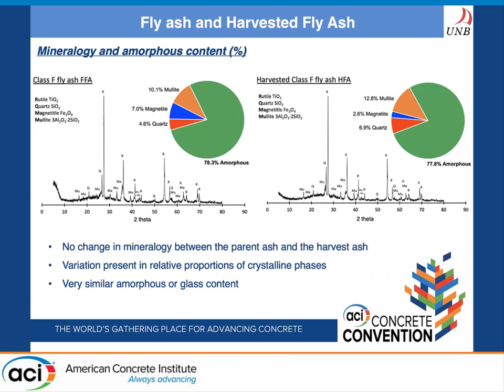Quantitative XRD results show that both the fly ashes and the harvested ash contain amorphous phases, visible from the hump between 20 to 30 degrees 2-theta. Both ashes contain the same mineral phases, though the proportion of phases differs slightly between samples — likely due to weathering effects or variability in the coal used. Importantly, the amorphous content of these ashes is very consistent, and this is really positive to see that the amorphous content of harvested ash does not change much compared to its parent ash.